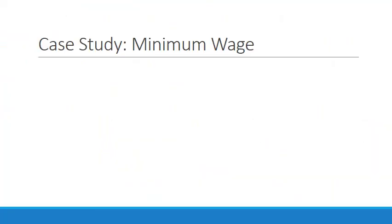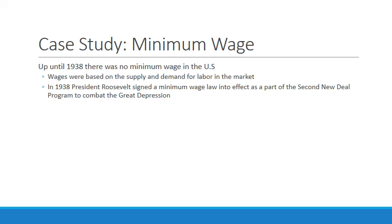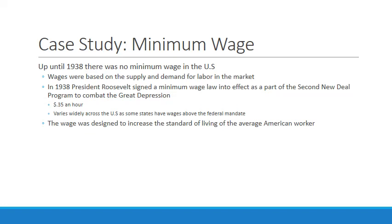As a case study for price floors, we'll look at minimum wages. Up until 1938, there was no minimum wage in the United States — market equilibrium determined wages and the quantity of workers. In 1938, President Roosevelt signed a minimum wage law as part of the Second New Deal to combat the Great Depression, setting the original minimum wage at $0.35 an hour. Minimum wage varies widely across the U.S. — some states pay above the federal mandate of $7.25 an hour, bumping it up to $9.25, $9.50, or even $10 an hour. The wage was designed to increase the standard of living of the average American worker.